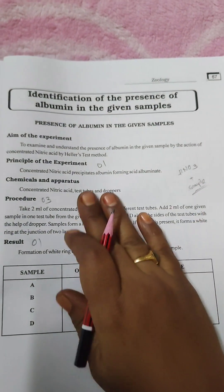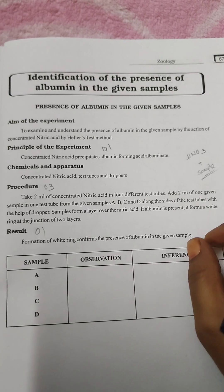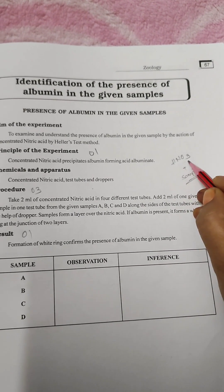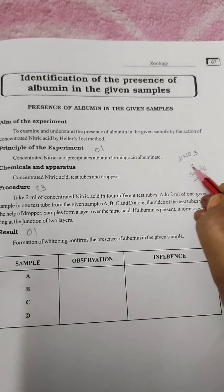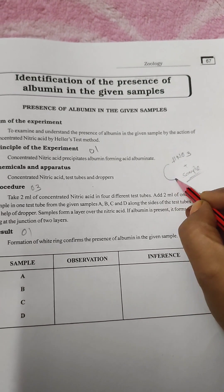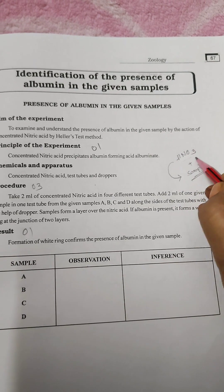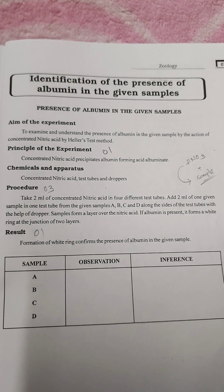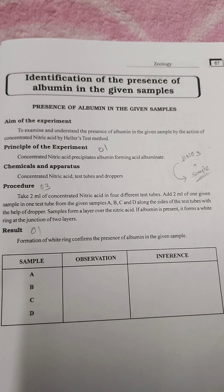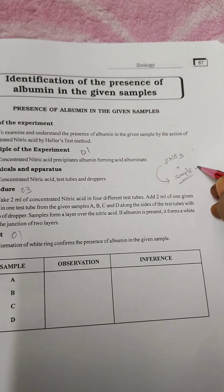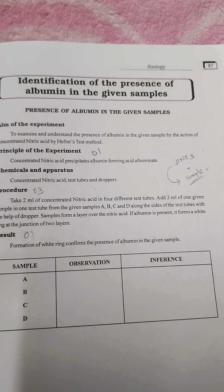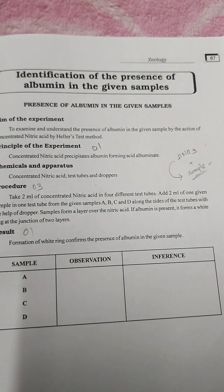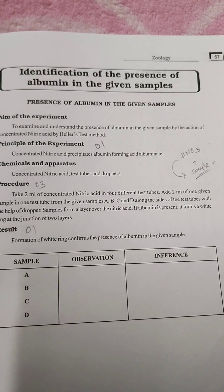Actually in all experiments of zoology we add the chemicals or reagents to the sample, but here it is different. First of all we take a test tube and add the nitric acid or concentrated HNO3. Then only we add the sample to the HNO3. Take the concentrated nitric acid in 4 different test tubes and add 2 ml of the sample.